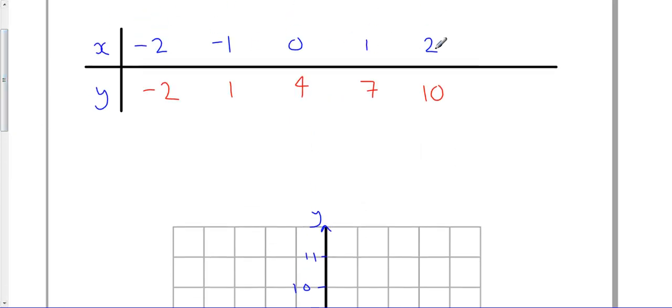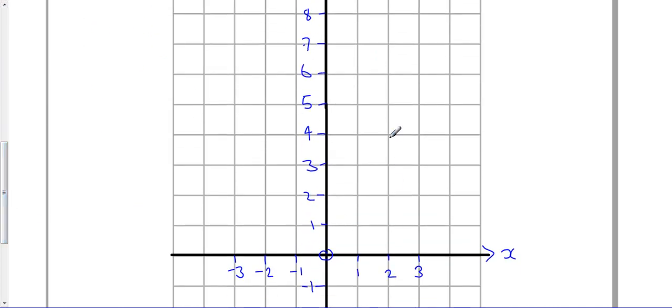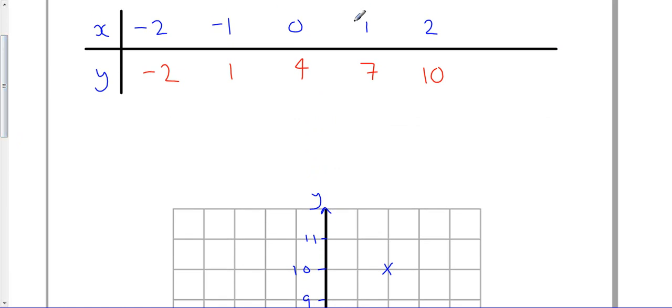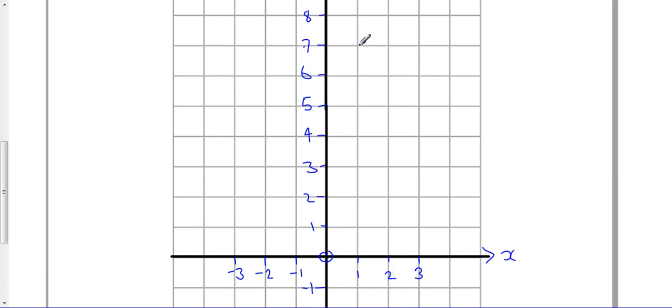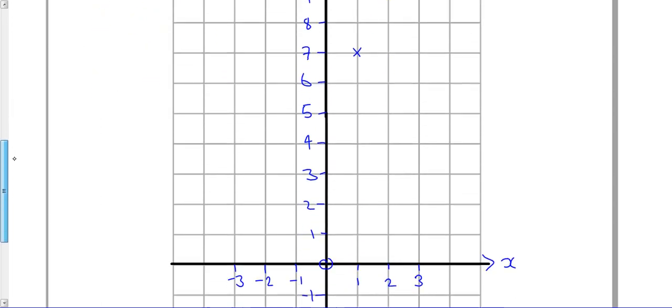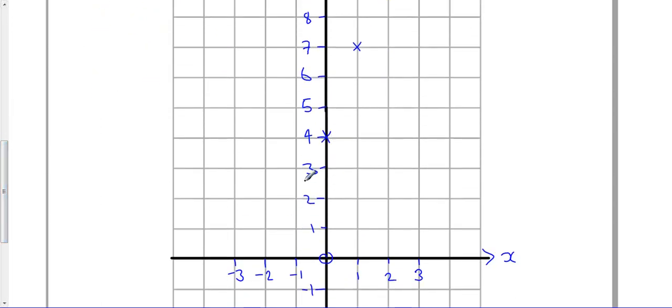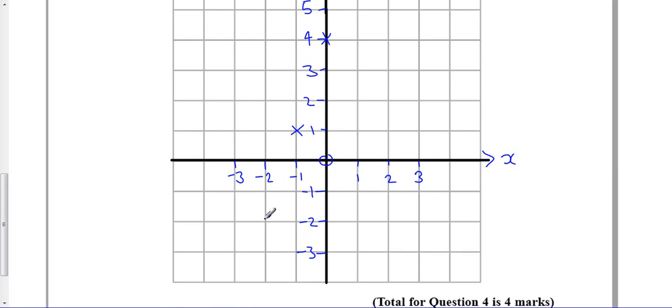Now I'm just going to plot my numbers. So I'm going to start here. 2 goes with 10, so at x=2 I go up to y=10. 1 goes with 7, so on the x number 1 I go up to the y number 7. 0 with 4. Then -1 with 1.